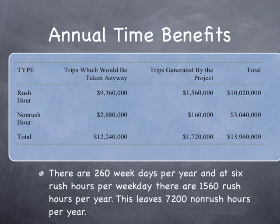We need to sum this up over all the days and discount it. Multiply across the year: 260 workdays per year — 52 times 5 — with 6 rush hours per weekday on California Highway 101. That gives you 1,560 rush hours per year and 7,200 non-rush hours per year. Then multiply those numbers to get your annual time benefits.